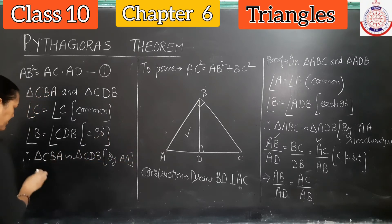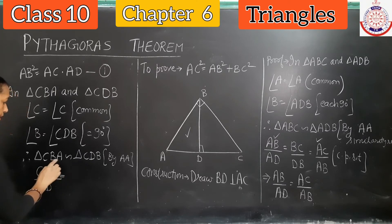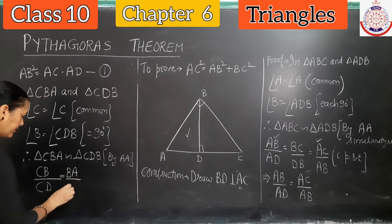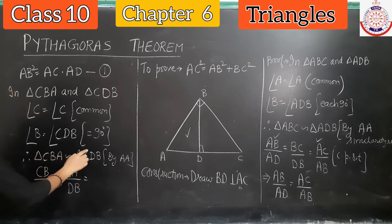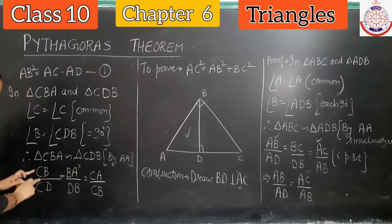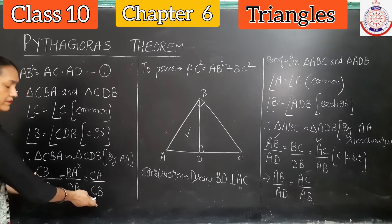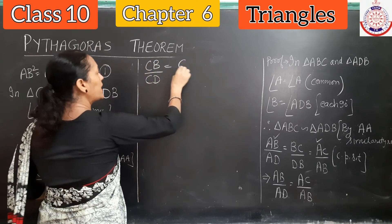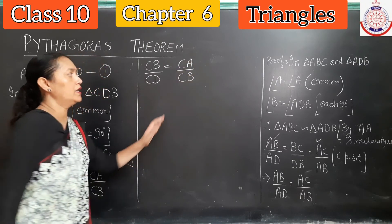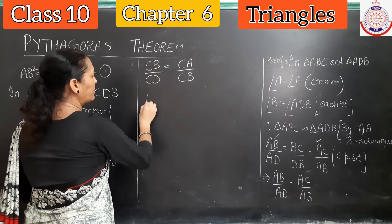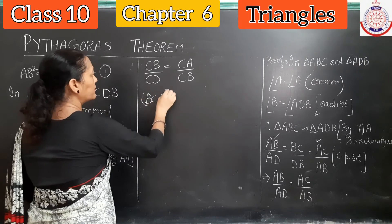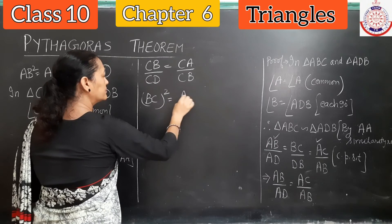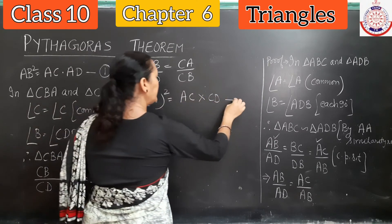Again, as done earlier, sides will be proportionate. CB/CD = CA/CB as corresponding parts of similar triangles. I will be using CB/CD = CA/CB. Cross multiplication gives us CB² or BC² = AC × CD. That will be our second equation.